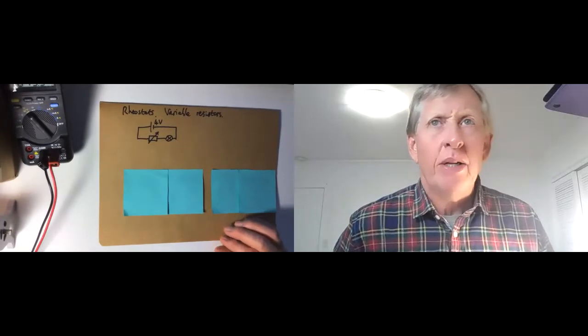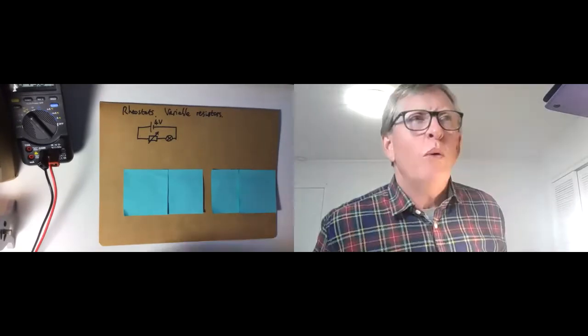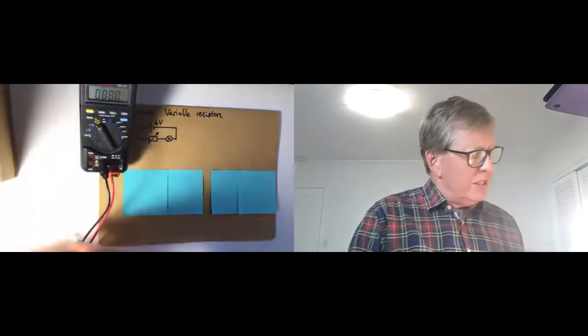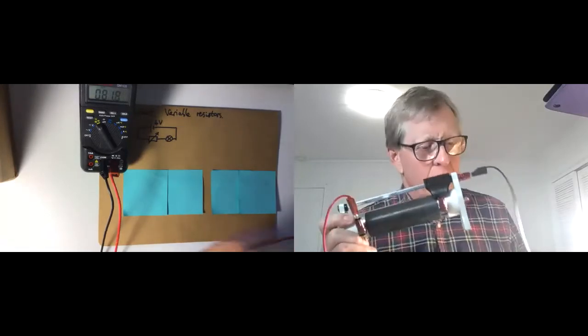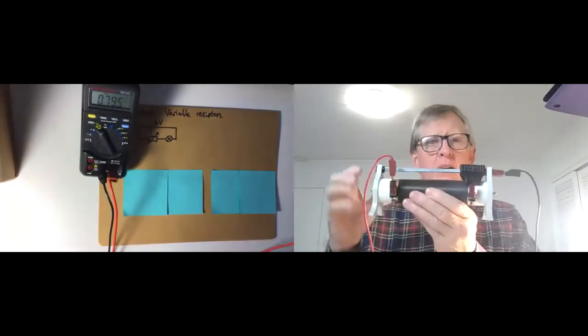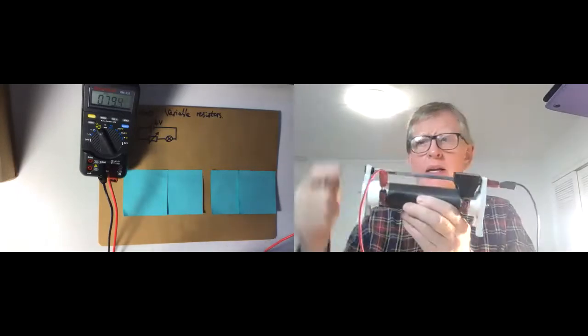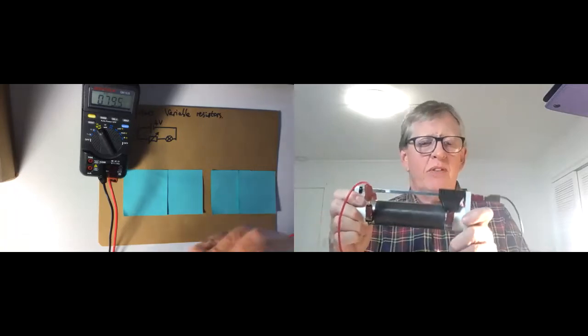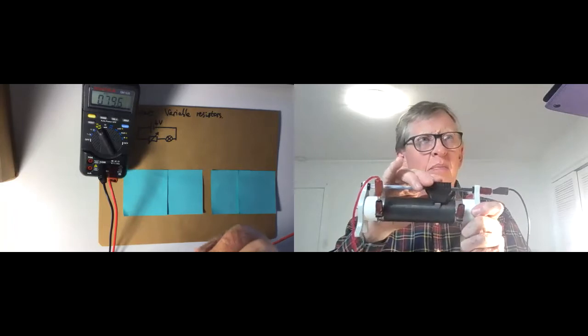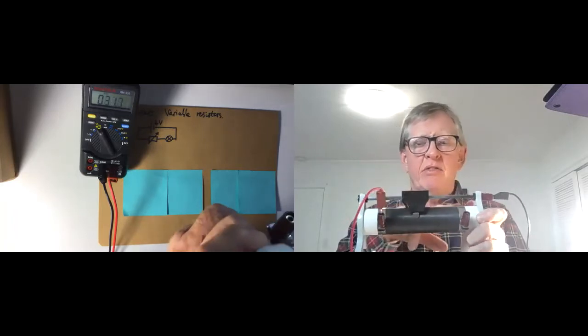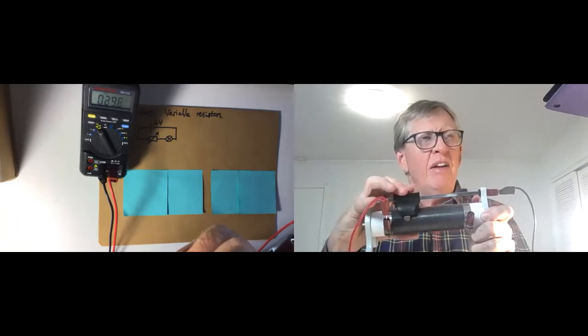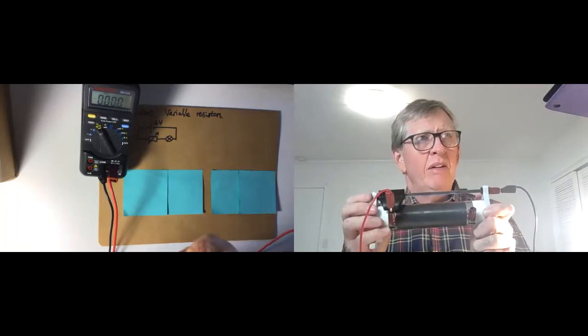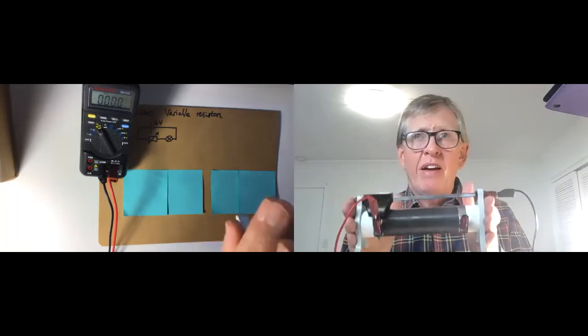Rheostats is our starting point. I've already got here a rheostat wired in to show you. Hopefully you would have used these previously. We connect them in at the top, it comes out at the bottom. As we move the slider along the top, the resistance changes. It's a resistor, and we can get its resistance to vary. You can go right down here, pretty close to zero. There it is. So that's our variable resistor.